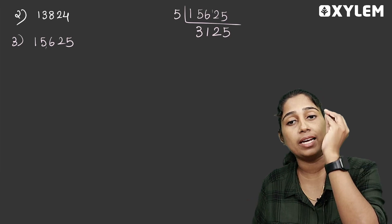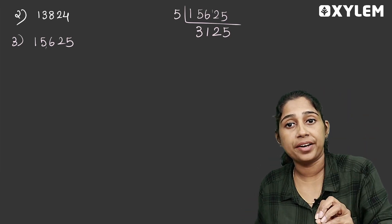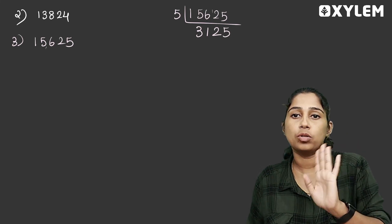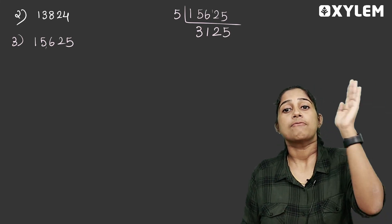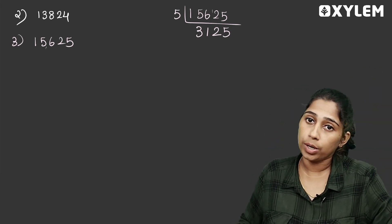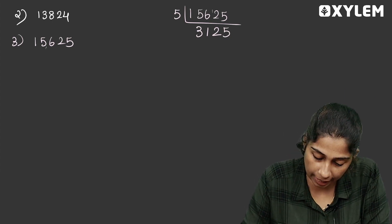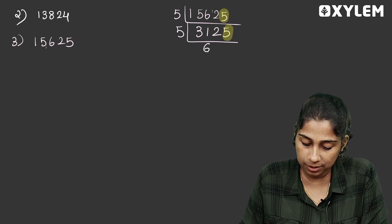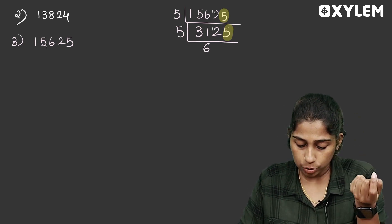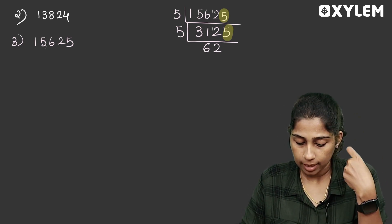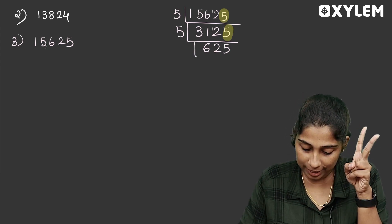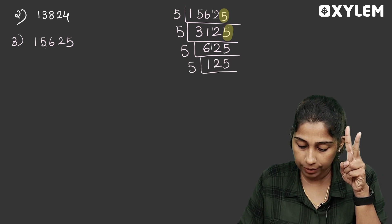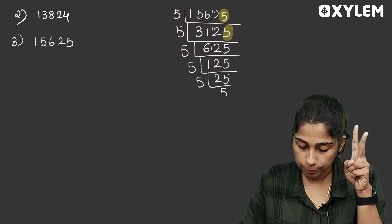We start with even numbers. 2 is 5. 5 is 5. We start with 2. Even number 2. 5 is 5. 6 times 5 is 30. Balance 12. How many times do we have? 2 times is 10. The other one is 25. 5 times 5 is 25. Balance 1. 25 divided by 5 is 5. This is the prime factorization of 15,625.